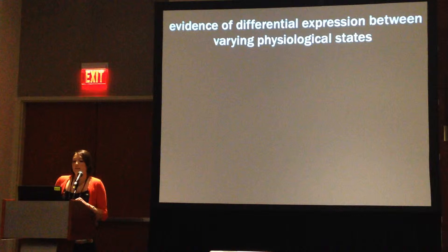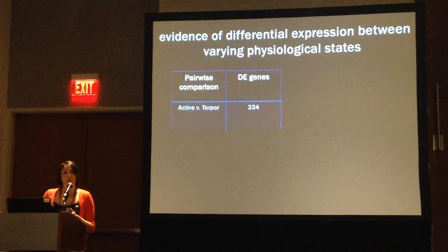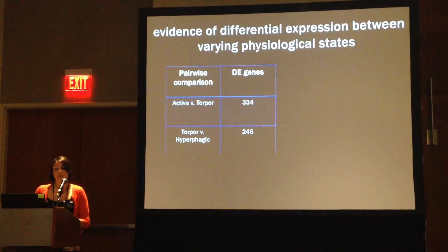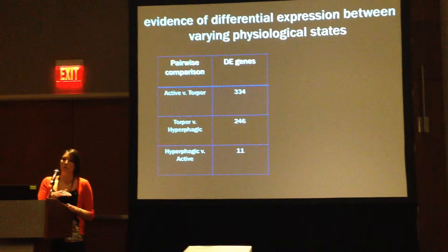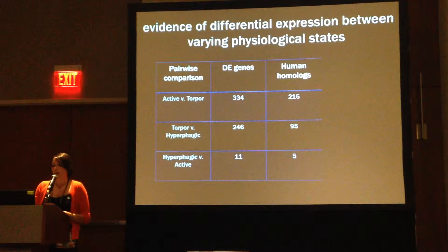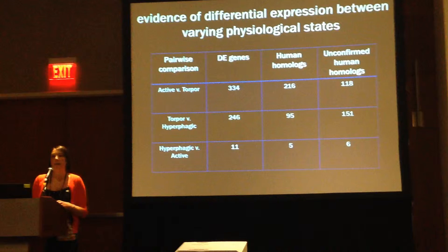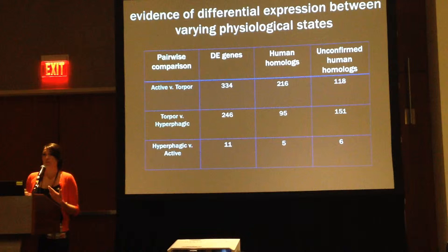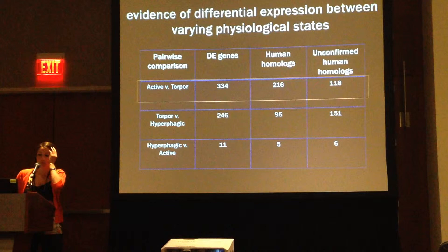We find evidence of differential gene expression between varying physiological states. For this project, we did pairwise comparisons between our three time points. In active versus torpor, we find 334 genes that are differentially expressed. In torpor versus hyperphagic, we find 246 genes. In hyperphagic versus active, we find 11. We also find 216, 95, and 5 genes respectively with human homologs, leaving 118, 151, and 6 that don't have a hit in human — meaning the genes may be too dissimilar from human to produce a significant BLAST hit, or they may be dwarf lemur-specific. This is an interesting result that warrants future investigation, which we are currently working on.